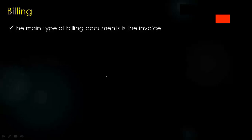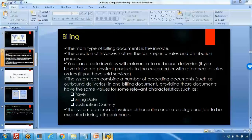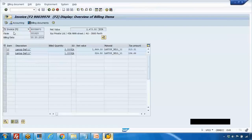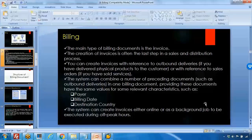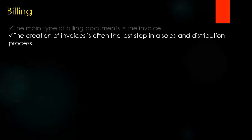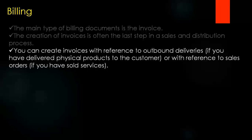The main type of billing document is the invoice, which is F2 — the one I was showing before. The creation of invoices is often the last step in the sales and distribution process. You can create invoices with reference to outbound deliveries if you have delivered a physical product to the customer, or with reference to the sales order if you have sold a service.